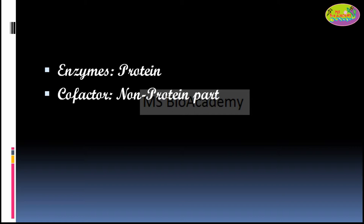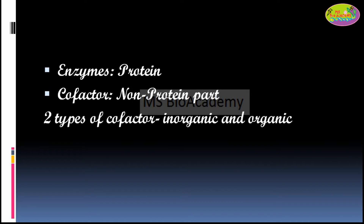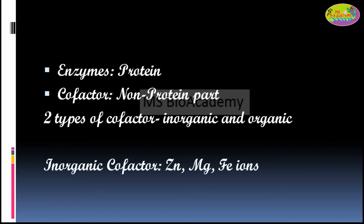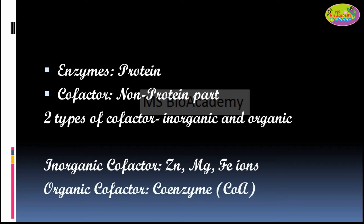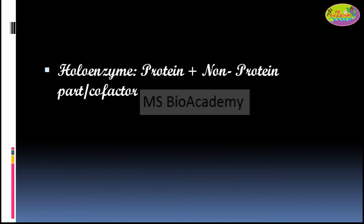There are also conjugated enzymes, which need certain helpers in the form of a cofactor or coenzyme to get activated. A cofactor is basically the non-protein part of the enzyme. There are two types: inorganic cofactors, such as metal ions like zinc, magnesium, and iron, and organic cofactors, which are mainly coenzymes — for example, Coenzyme A.